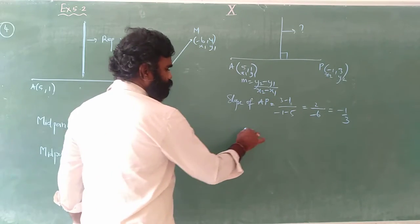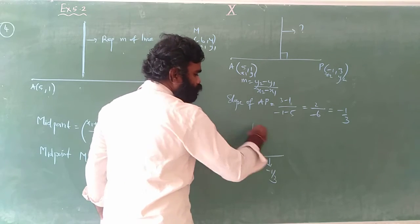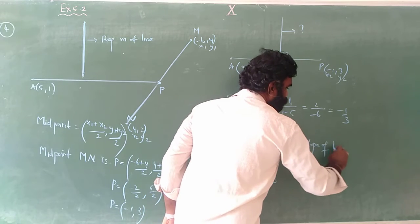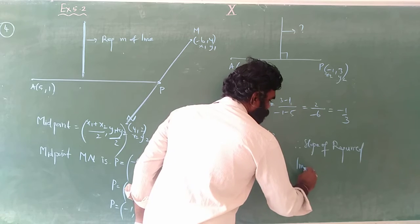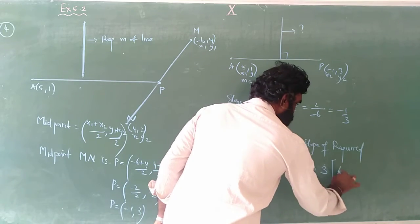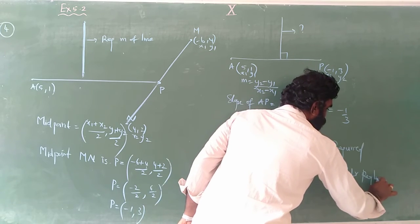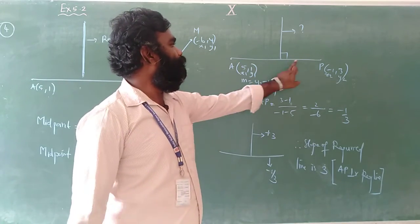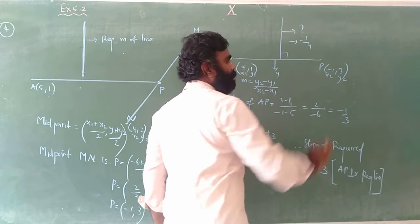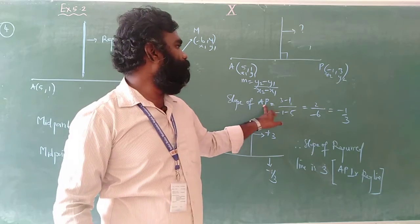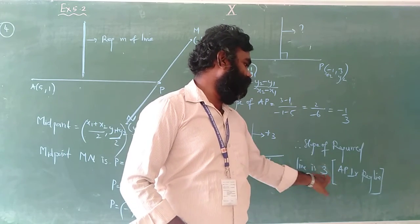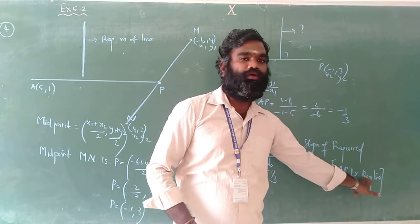Since the two lines are perpendicular, I need to apply the perpendicular slope rule. The slope of AP is -1/3. To get the slope of the required perpendicular line, take the reciprocal and change the sign: reciprocal of 1/3 is 3, and minus becomes plus. So the slope of the required line is 3. AP is perpendicular to the required line, and the answer is 3.